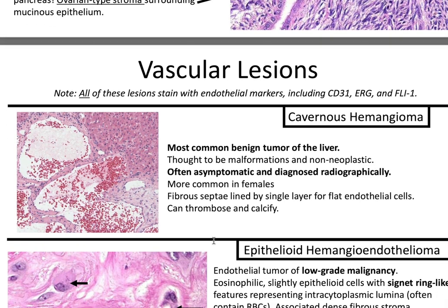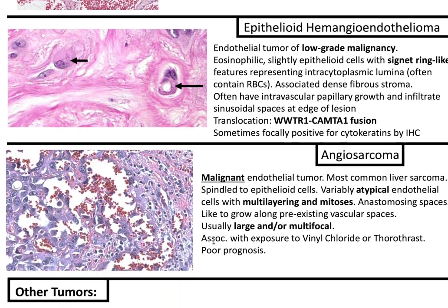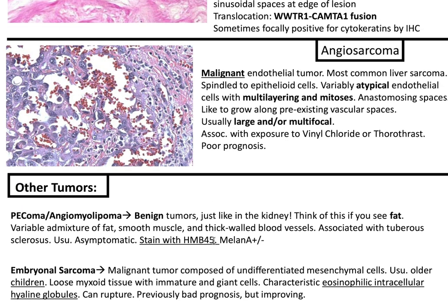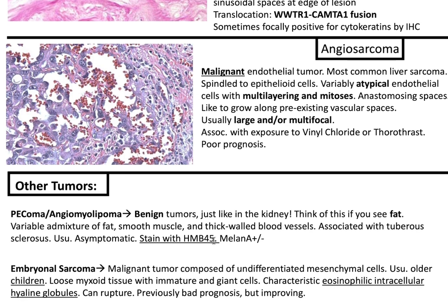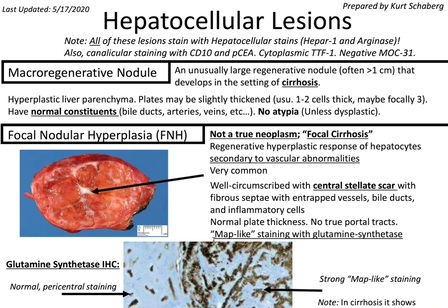Vascular lesions stain with CD31, ERG, and FLI-1. Cavernous hemangioma: most common benign tumor of the liver, often asymptomatic and diagnosed radiographically. Epithelioid hemangioendothelioma: endothelial tumor of low-grade malignancy with signet ring-like features (intracytoplasmic lumina), blister cells, often containing red blood cells; WWTR1-CAMTA1 fusion. Angiosarcoma: malignant endothelial tumor with variably atypical endothelial cells, multilayering and mitoses; usually large and/or multifocal; poor prognosis. PEComa/angiomyolipoma: benign tumors just like in the kidney — think of this if you see fat. Embryonal sarcoma: malignant tumor with undifferentiated mesenchymal cells, usually in older children, with characteristic eosinophilic intracellular hyaline globules. Thank you for listening to Pathagonia using KurtzNotes; we'll catch you on the next episode.